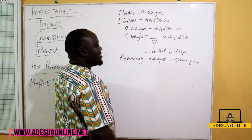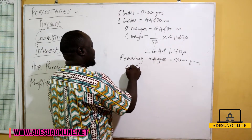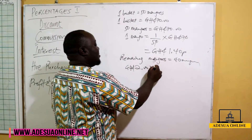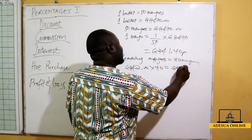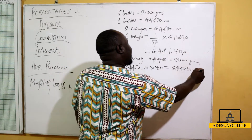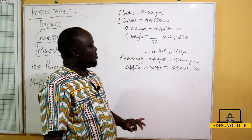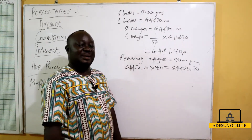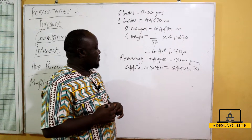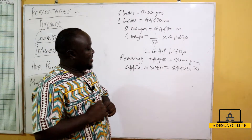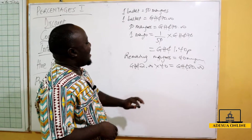With these 40 mangoes I decide to sell at 2 cedis each. So 2 cedis times 40 will give me 80 cedis. So 80 cedis is the amount I'm going to get after selling the mangoes for 2 cedis each.